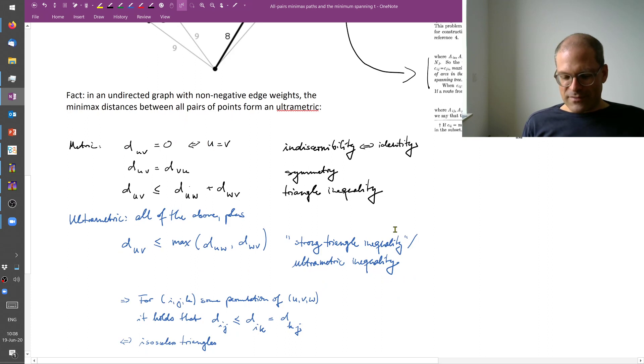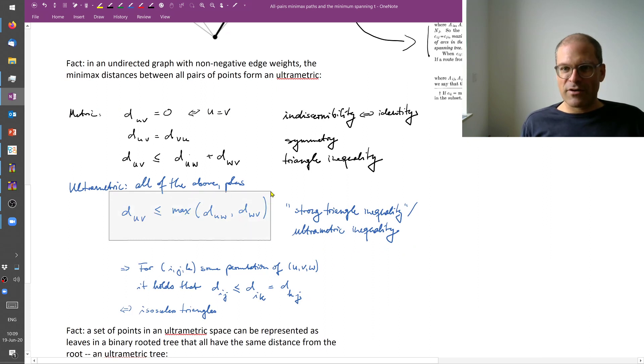Now, in an ultrametric, these properties hold plus an extra one. This one is a tightening of the triangle inequality. It's stronger than the triangle inequality. It's called the ultrametric inequality. Namely, the distance between u and v must be less than or equal not the sum of the other two distances, but must be less than or equal the maximum of the other two distances. And we're introduced a distance to an auxiliary node w.